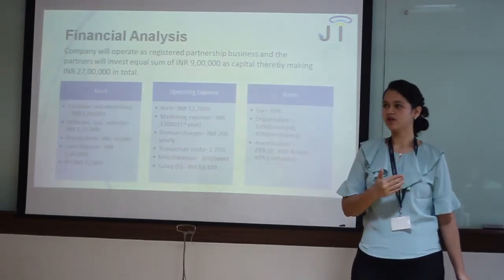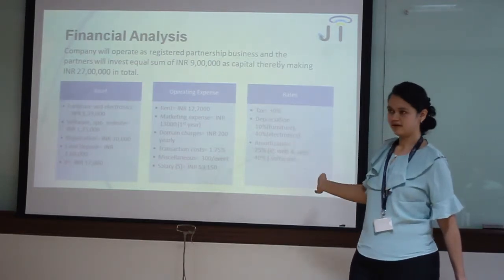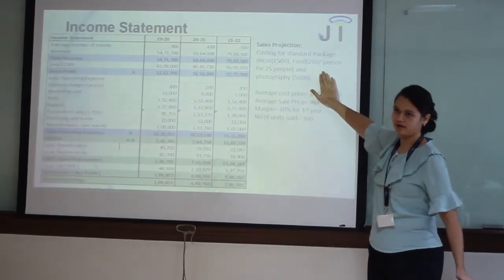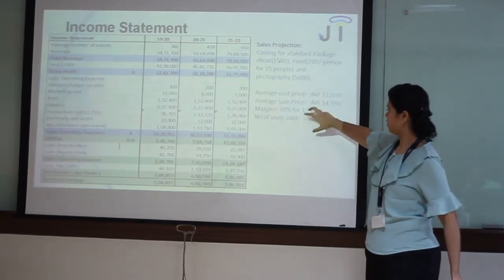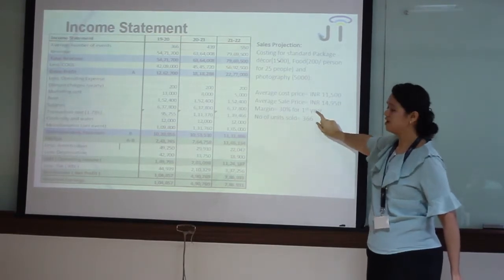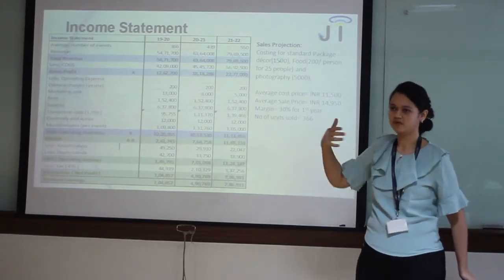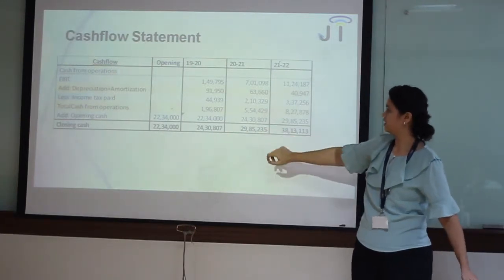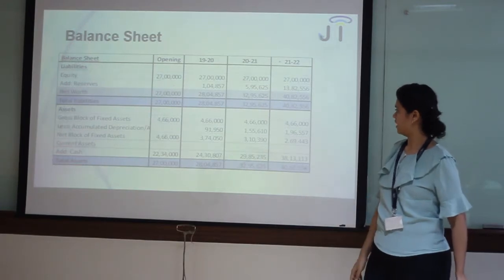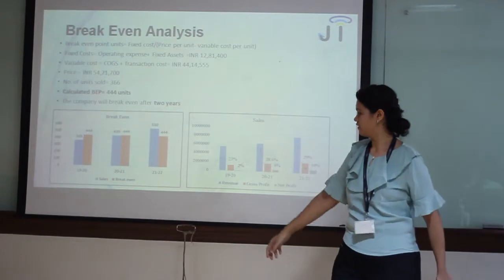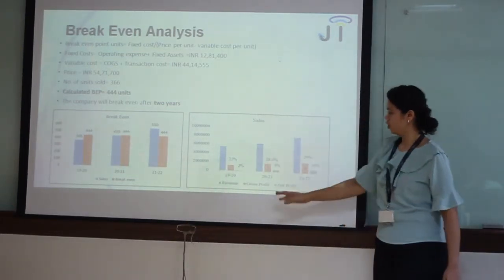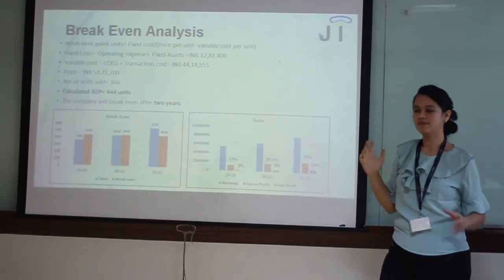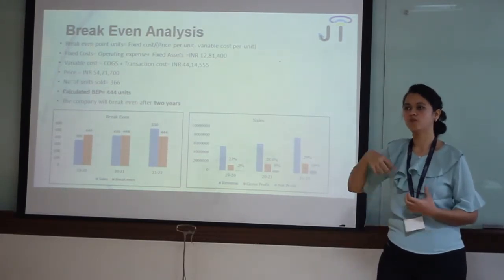Ours is a partnership firm. All three of us are equal contributors of 9 lakh each. These are the asset and operating expense parameters. This is the income statement. We have a standard package curated to offer, consisting of decor, food, and photography. This is the average cost price — we mark it up by 30% and sell it at 1,450. The first year expected sales are 366 transactions — meaning 366 packages. We aim to break even approximately by the end of the second year. You can also see the cash flow statement and balance sheet. The gross profit and net profit are increasing from 2% and going up to 10%. The main agenda is not to extract money from a single transaction but to do more volumes of transactions to have a stable base.